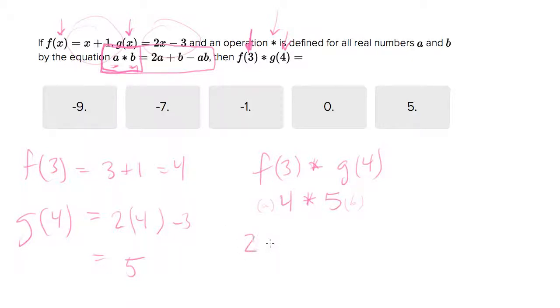So what we want is 2 times a, which is 4, plus b, which is 5, minus a, which is 4, times b, which is 5. Right? I'm just following, I'm just, I'm not inventing anything. I'm just following instructions.